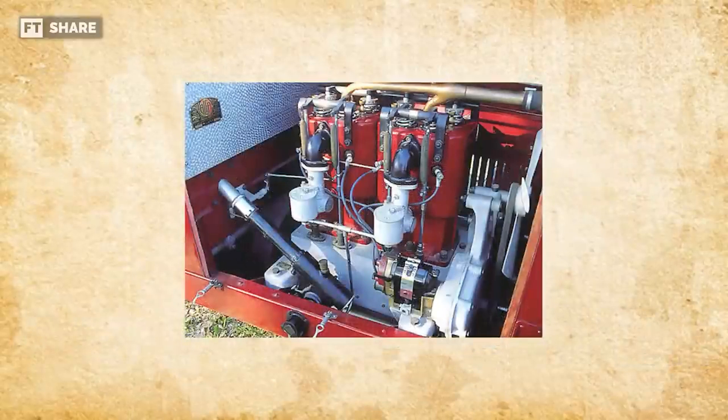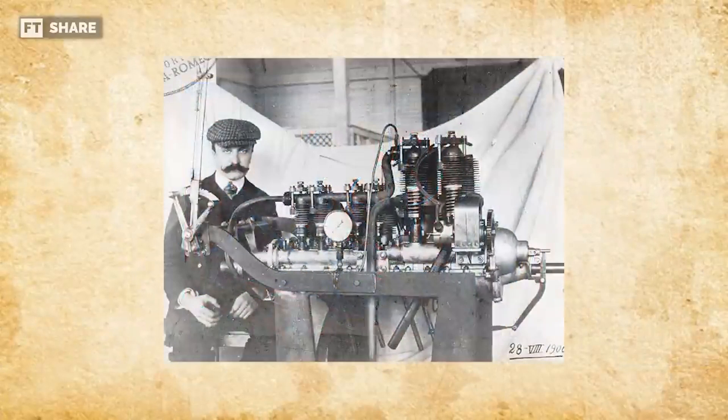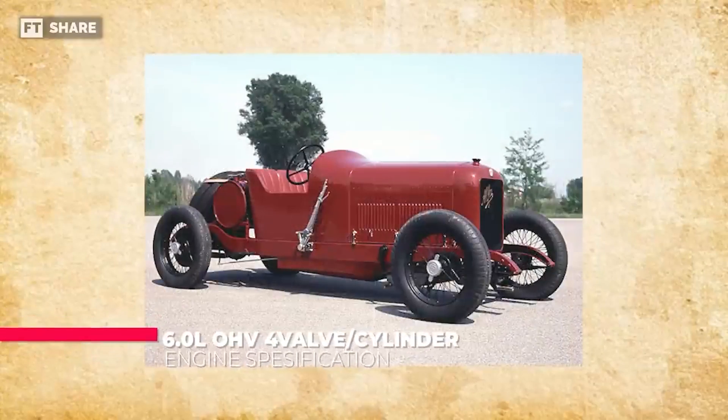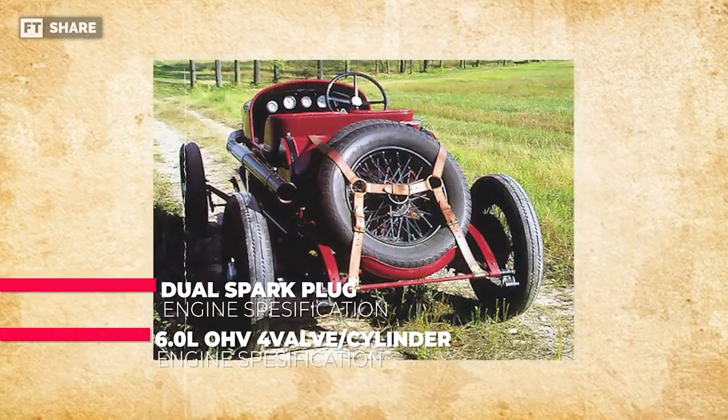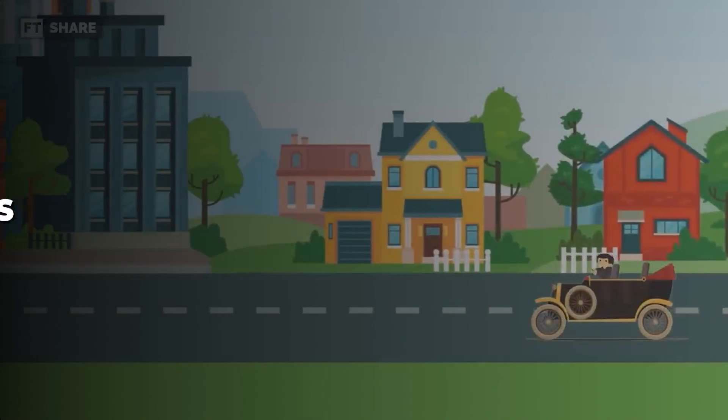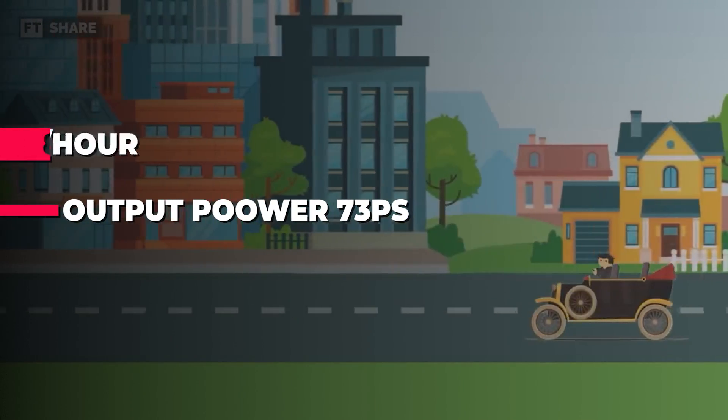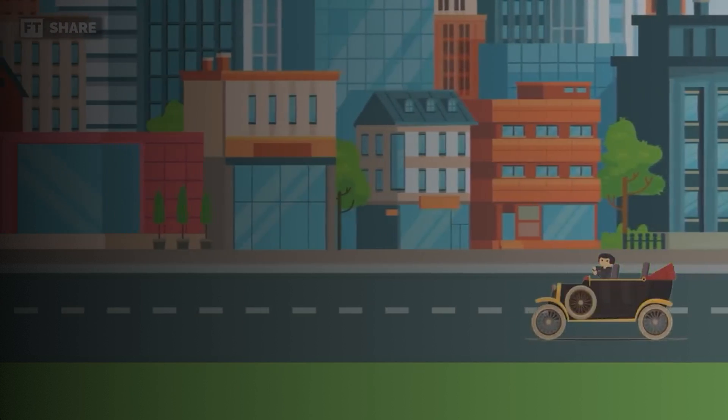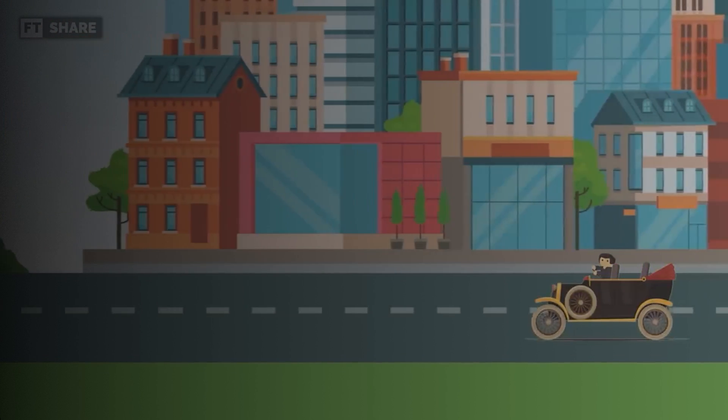At the time, this engine was a masterpiece thanks to its advanced technology. The engine had a capacity of 6 liters OHV with four valves per cylinder at a 90-degree angle and dual spark plugs. It produced 73 PS and could reach 85 mph. It's impressive to think that this was achieved 110 years ago.